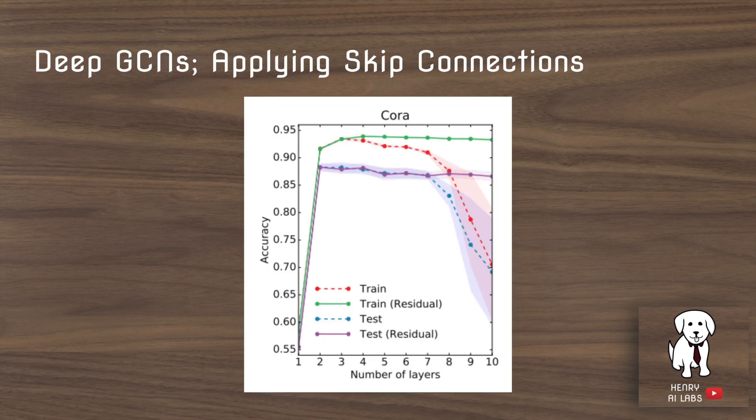Now this is another really interesting idea where they marry GCNs with resnets or skip connections. And this plot just shows the performance of the GCN as it was recently proposed, and the GCN with added skip connections between layers.